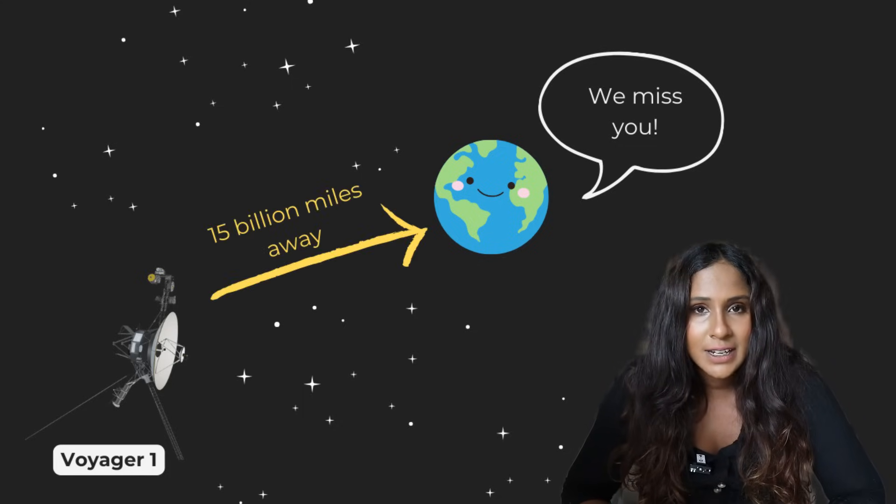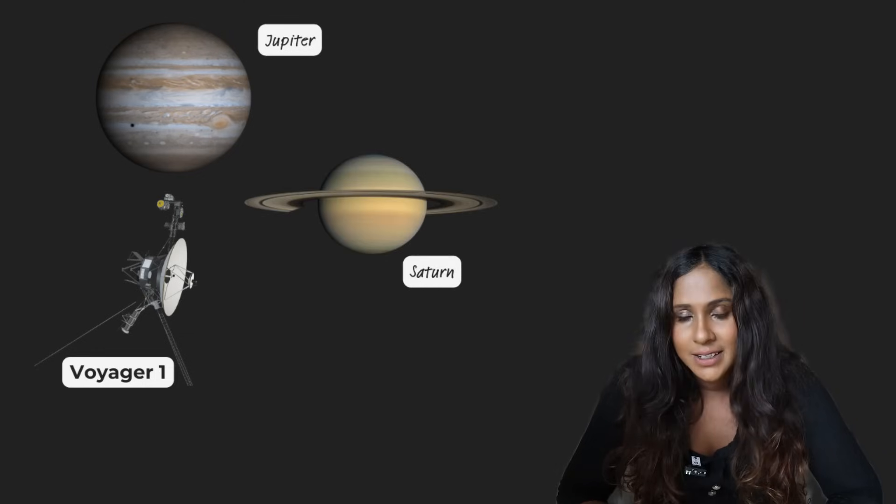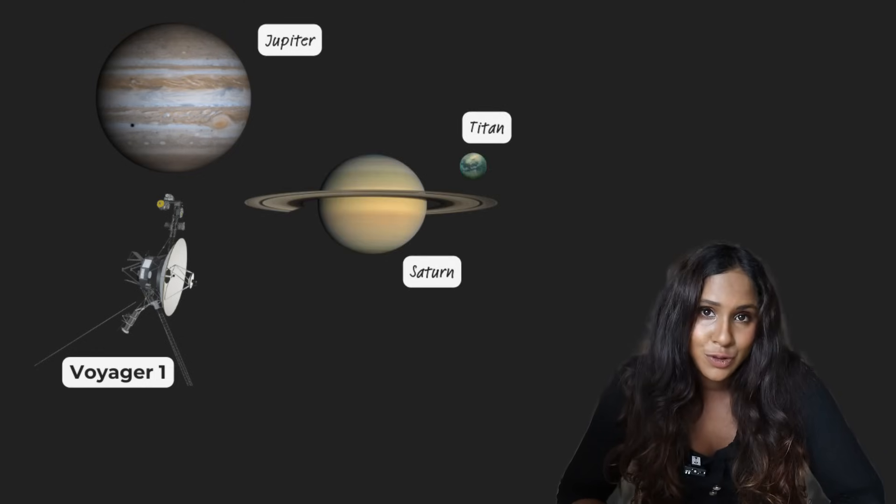And today it is the furthest human-made object from Earth, currently over 15 billion miles away. Voyager 1 gave us some first up-close looks of Jupiter, Saturn, and even Saturn's largest moon, Titan.